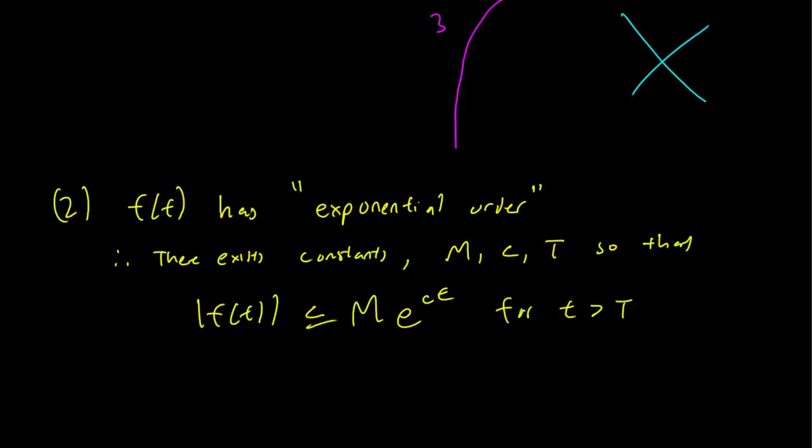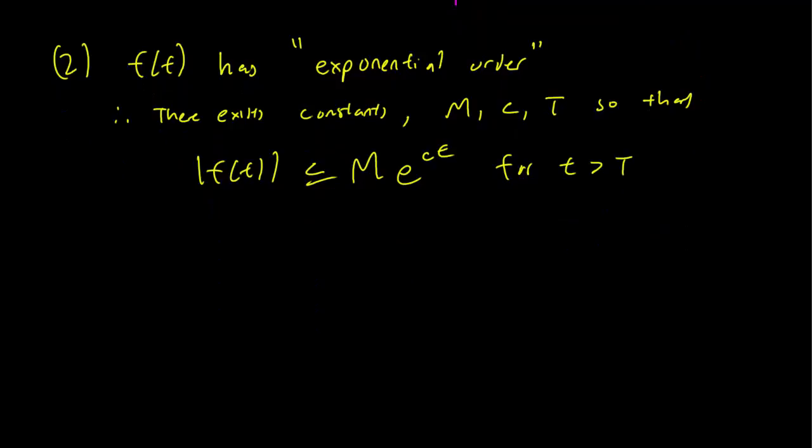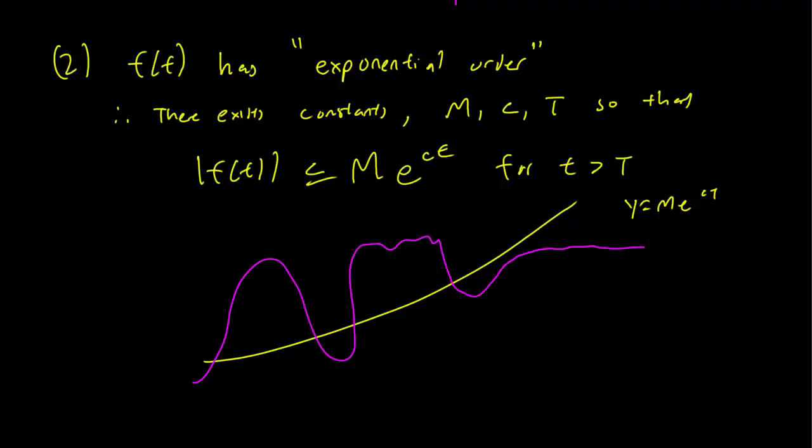So in other words, eventually, F is going to be smaller than an exponential function. So there's a speed limit for F. So, like, let's write down some exponential function. So y equals M e^(ct). Our F can exceed it initially, but eventually it has to grow slower than our exponential function for some values of M and C.